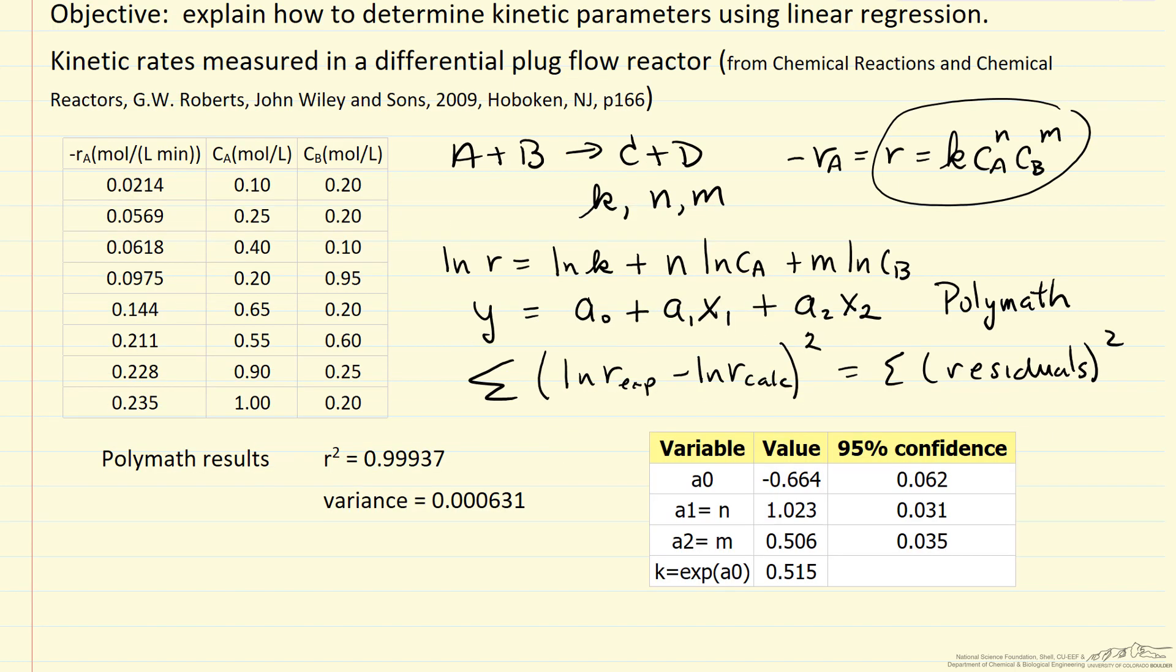So here we're given the values for A0, A1, and A2, approximately first order in concentration of A, and half order in the concentration of B. A0, remember, is the log of K, and so we can calculate K.